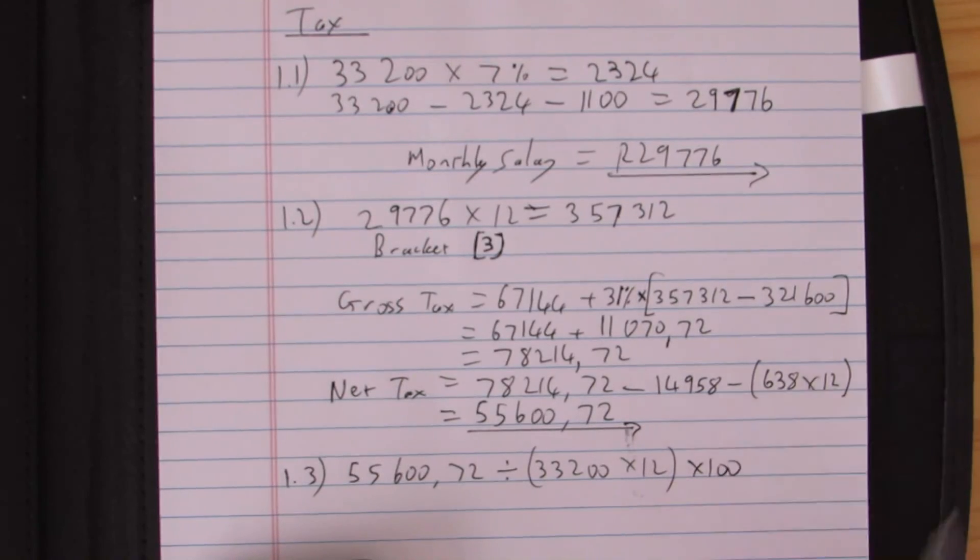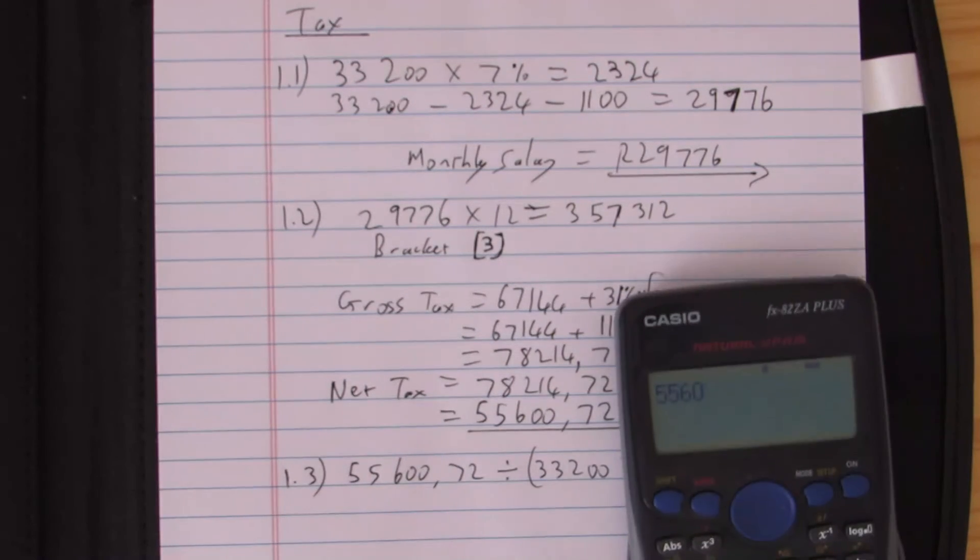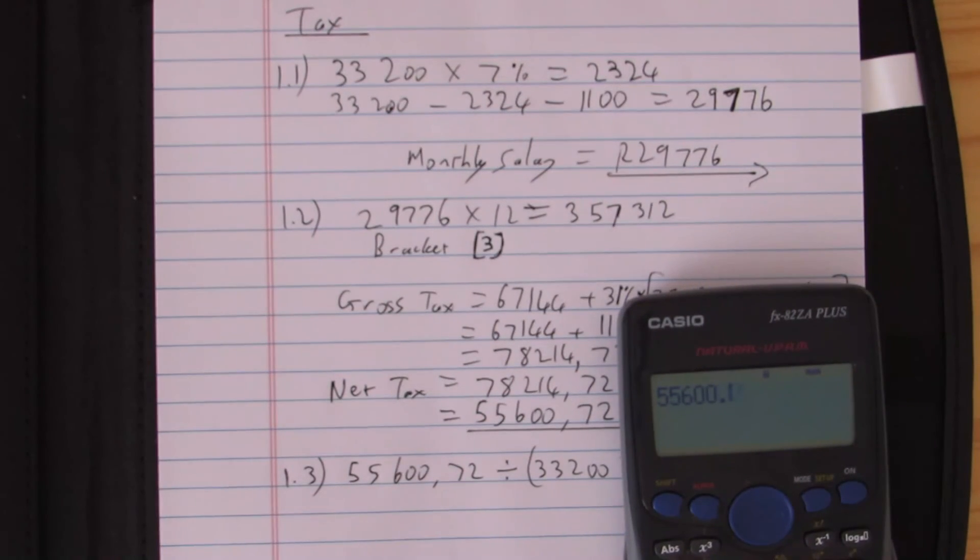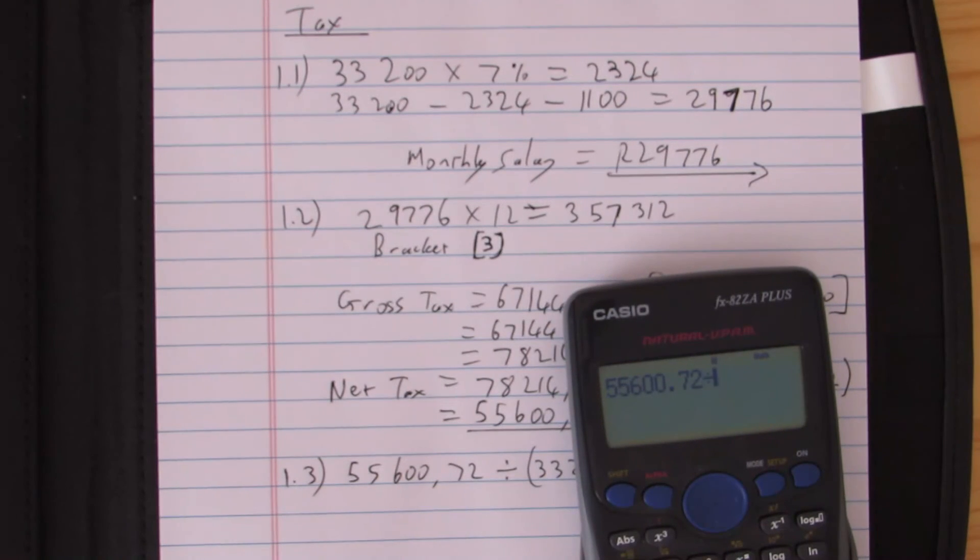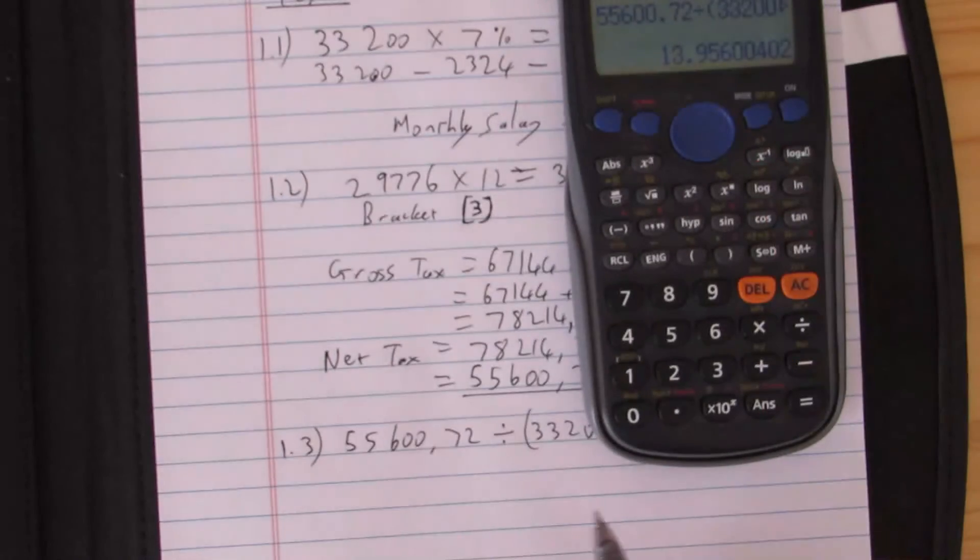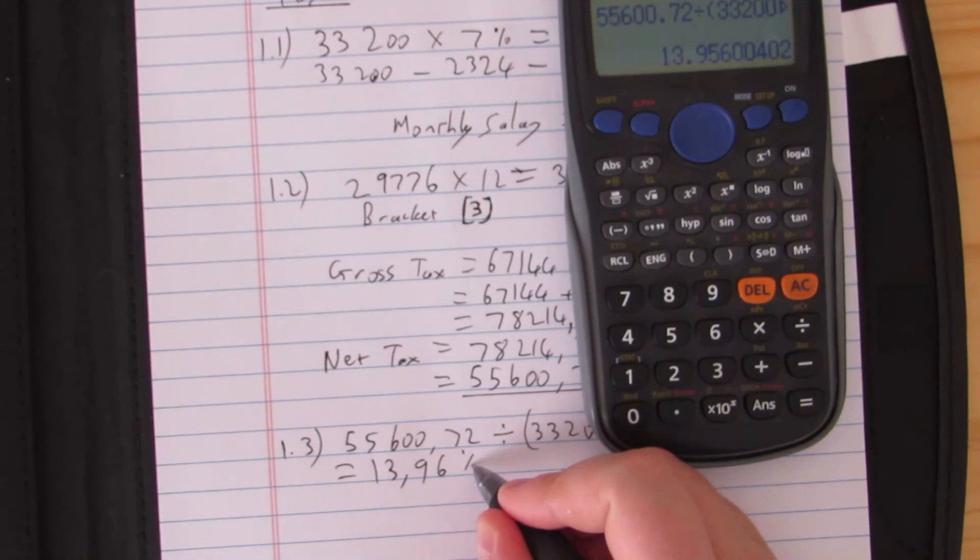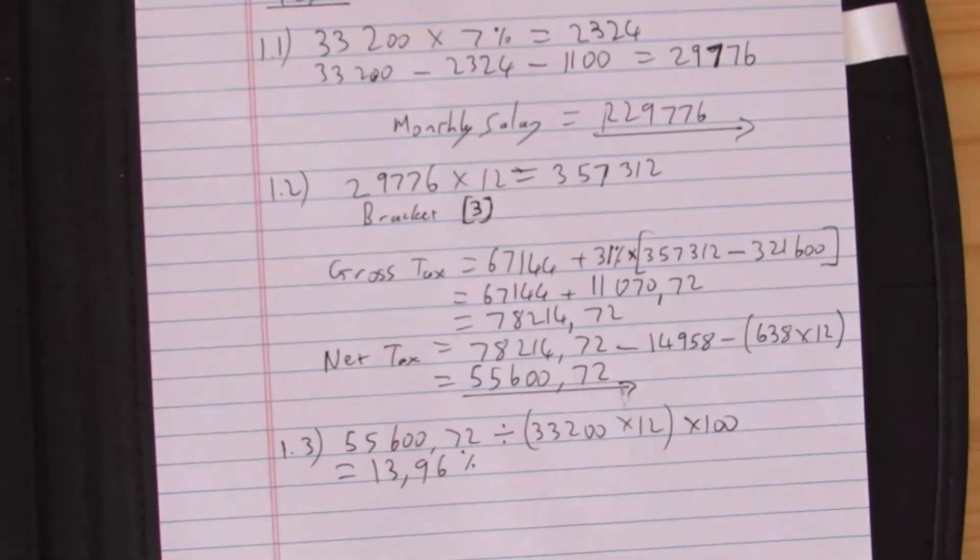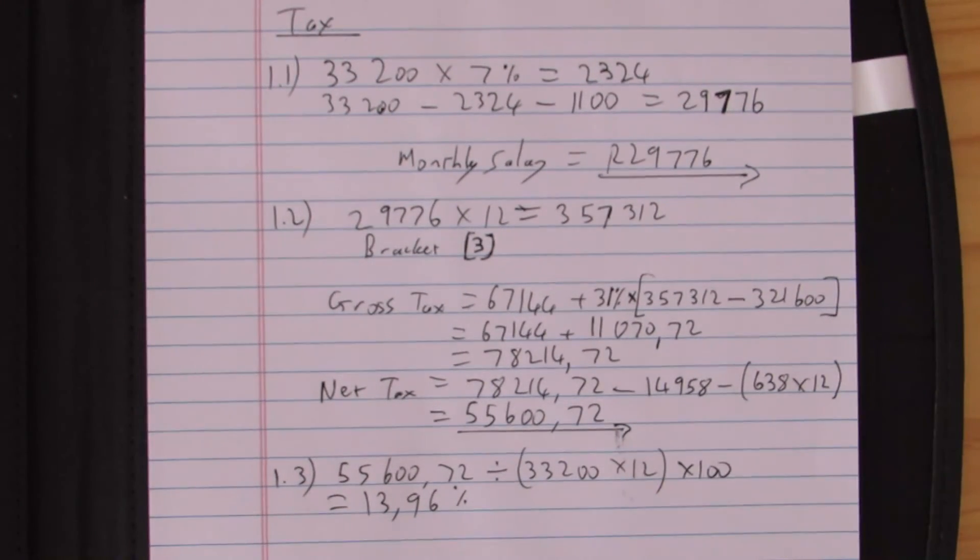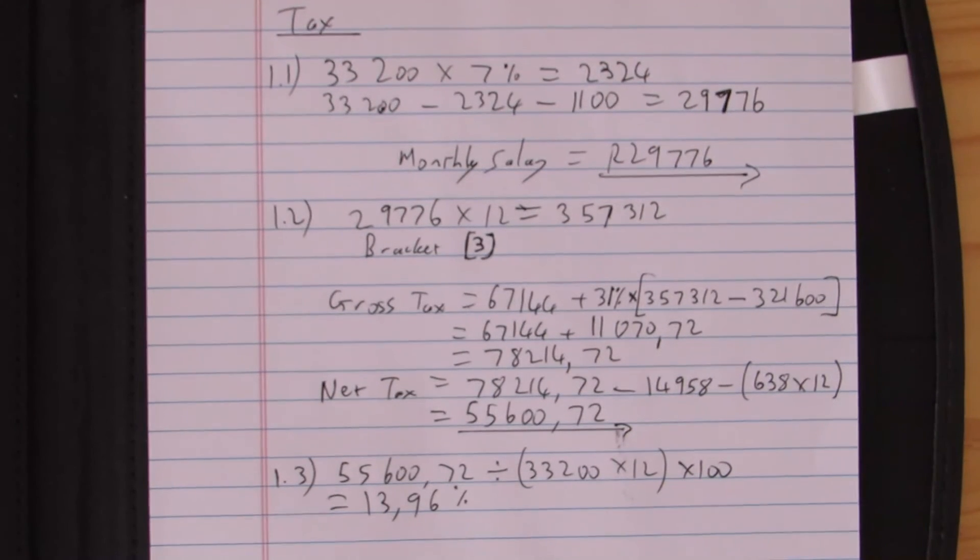We need to multiply this by 100 because we're doing a percentage. So 55,602.72 divided by 33,200 times 12 times 100. We are getting a percentage of 13.96%. Right, so there we go. That was a run through of taxation for you, and hopefully this has made it a little bit clearer. So good luck.